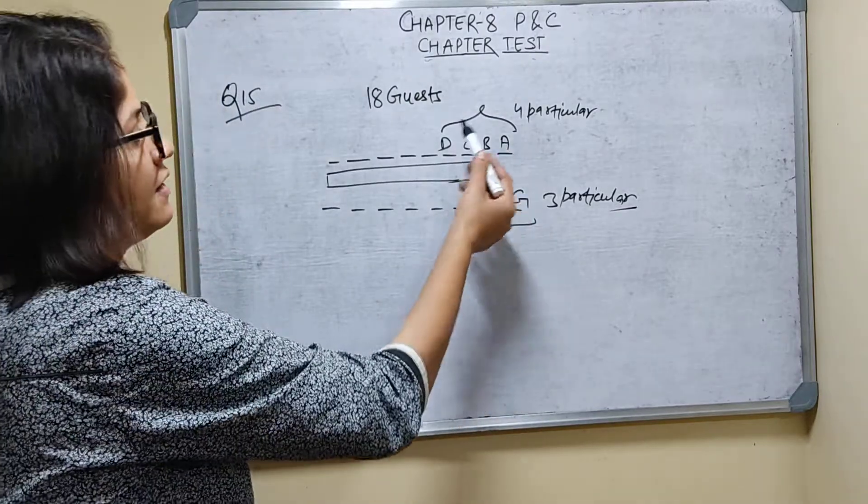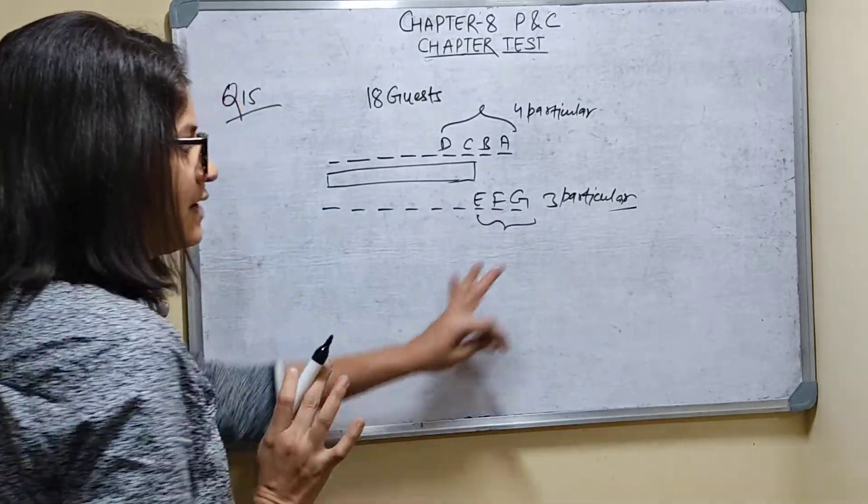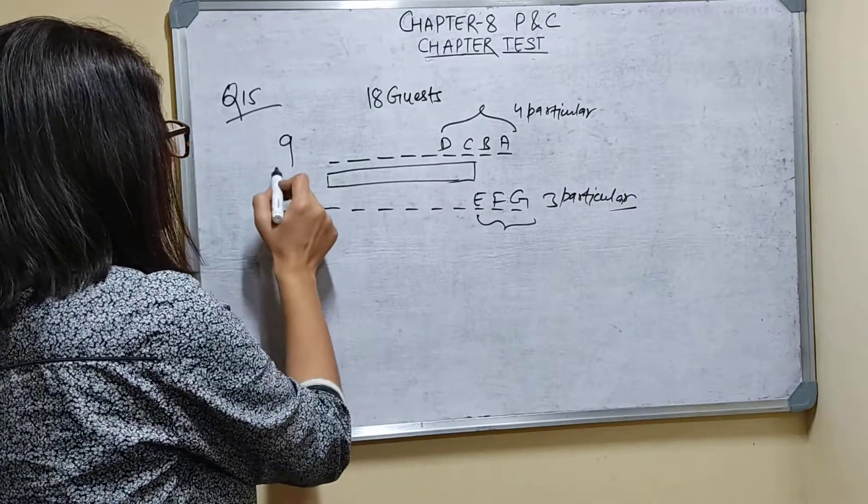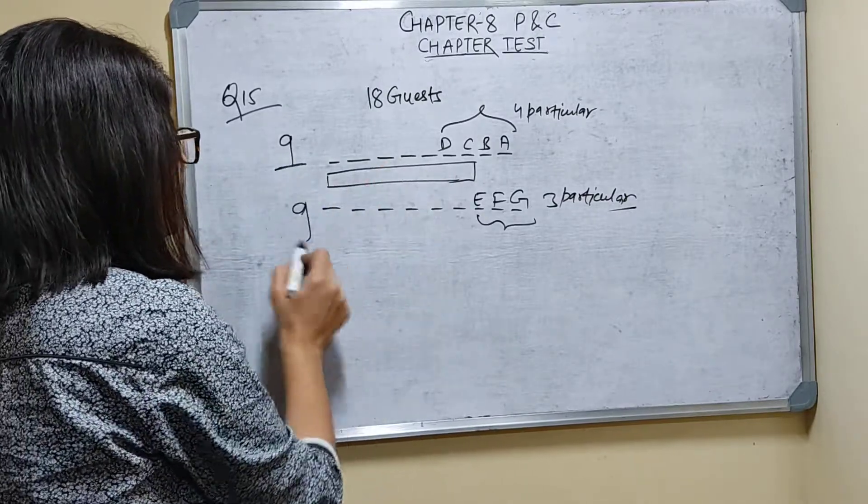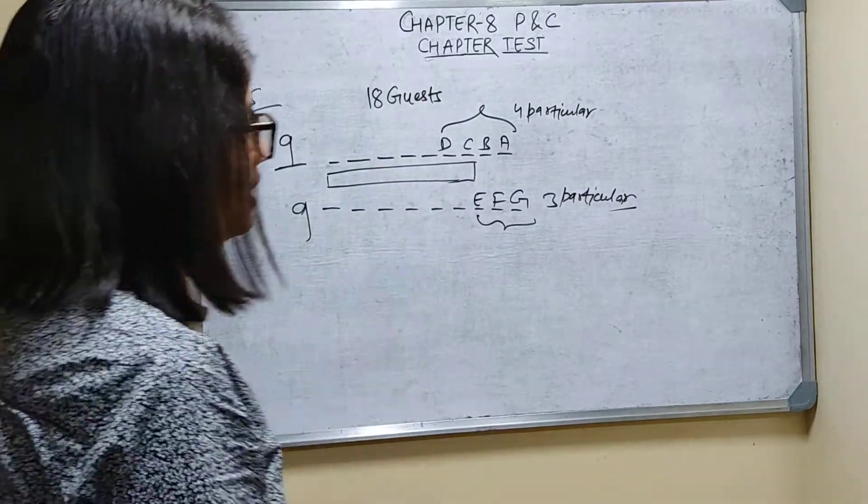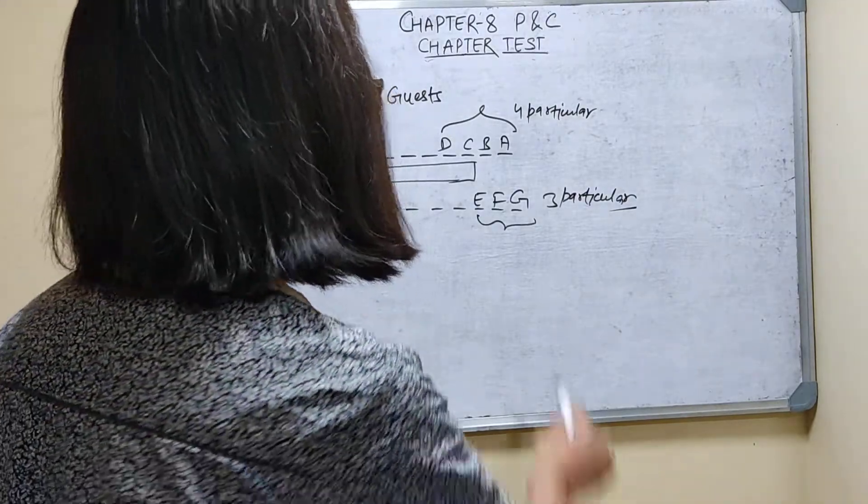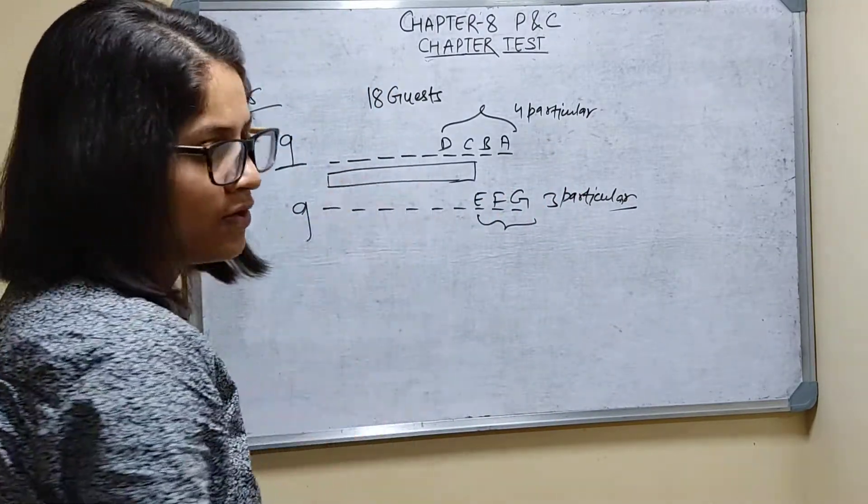So one way is 4 will sit here, 3 particular will sit this side. But total I have to make sitting arrangement for 9 on this side and 9 here also. So 4 particular will sit here, so how many remaining places are there? 5.